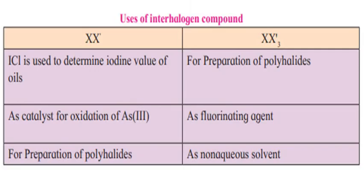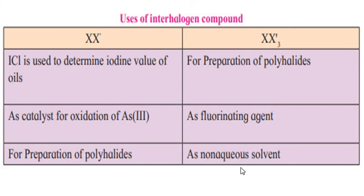Uses of interhalogen compounds: ICl is used to determine the iodine value of oils. XX'3 compounds are used for the preparation of polyhalides. Interhalogen compounds are also used as catalysts for the oxidation of As3+, as fluorinating agents, and as non-aqueous solvents.